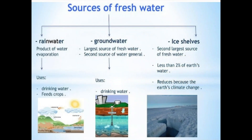What are the sources of fresh water? Rain water, ground water and ice shelves are the sources of fresh water. Rain water is a product of water evaporation and it is used for drinking and also to irrigate crops. Ground water is the largest source of fresh water. It is also used for drinking — we dig wells or bore wells, take out that water and use it for drinking. Most of the water present in ice shelves is used when it melts.